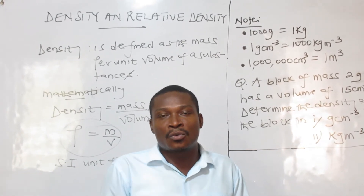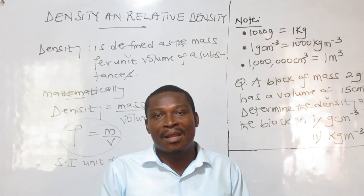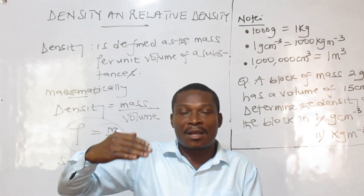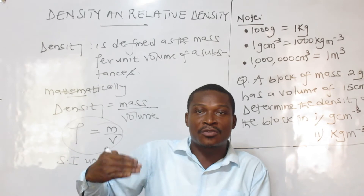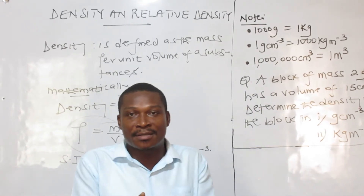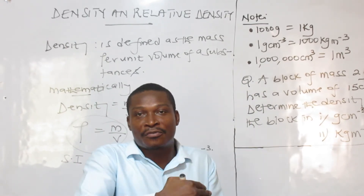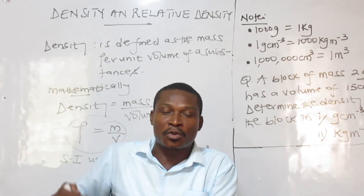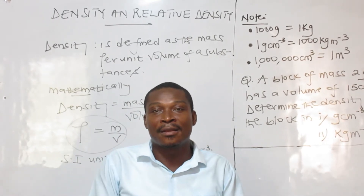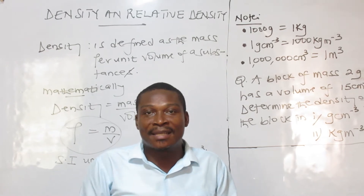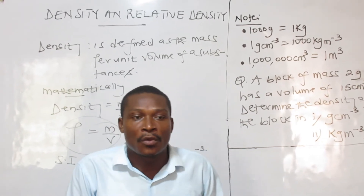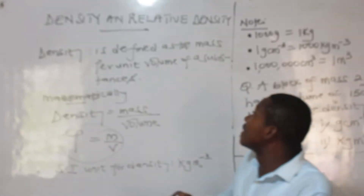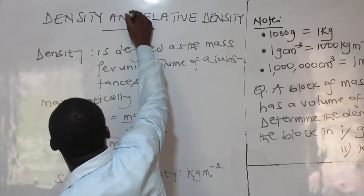When you go to my channel, visit the playlist. Within the playlist, we have topics arranged according to subjects. So when you take general mathematics, we have a series of math topics. When you take chemistry, we have a series of chemistry topics. We've packaged them nicely. We will be looking at a physics topic today: density and relative density.